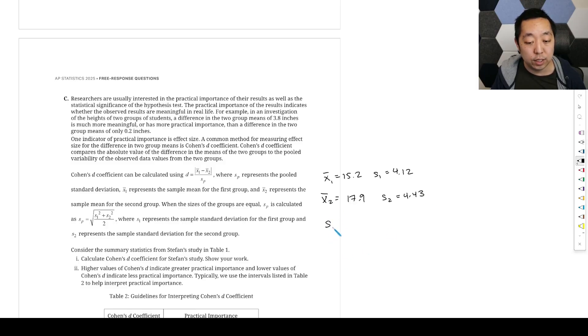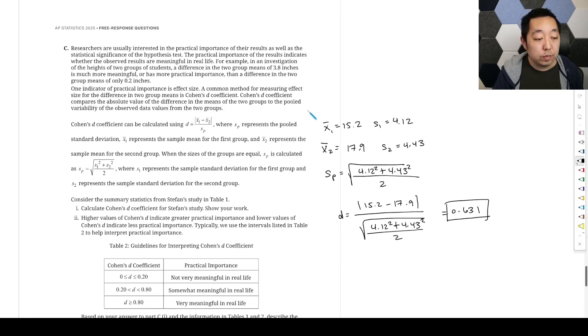So first let's calculate sp. It's going to be the square root of S1 squared, so 4.12 squared plus 4.43 squared divided by two. And then D is going to be the absolute value of 15.2 minus 17.9 divided by that value. So 15.2 minus 17.9, divide this by the square root of 4.12 squared divided by two plus 4.43 squared divided by two. And I get 0.631.